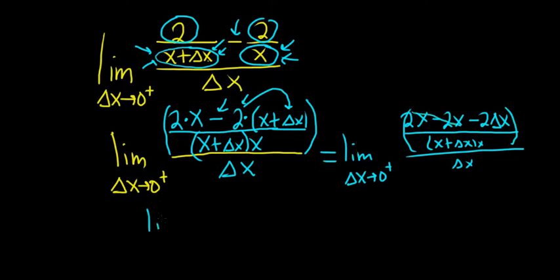I'm going to rewrite it one more time. So this is the limit as delta x approaches 0 from the right. So we have negative 2 delta x over x plus delta x times x, all over delta x.